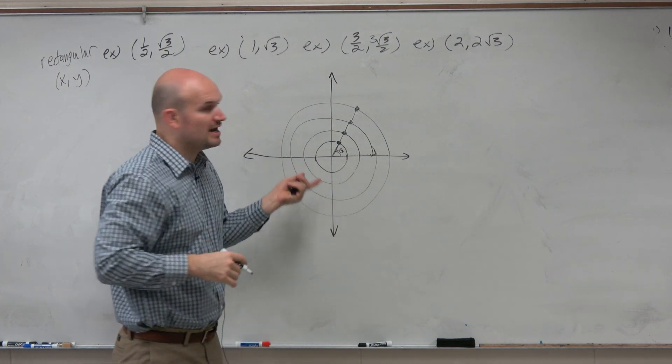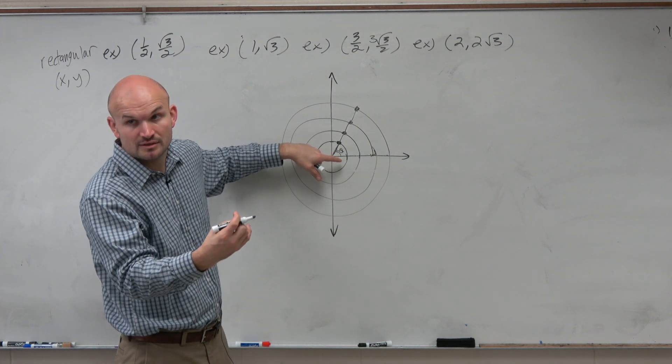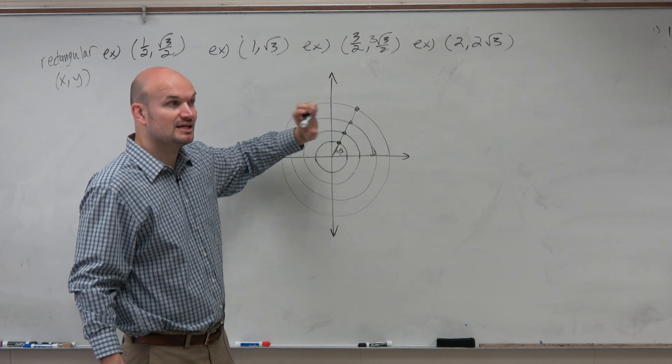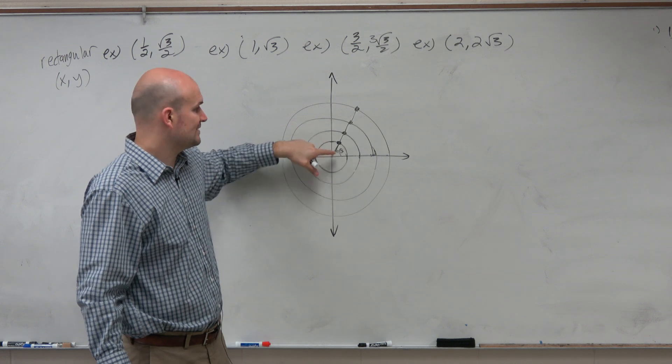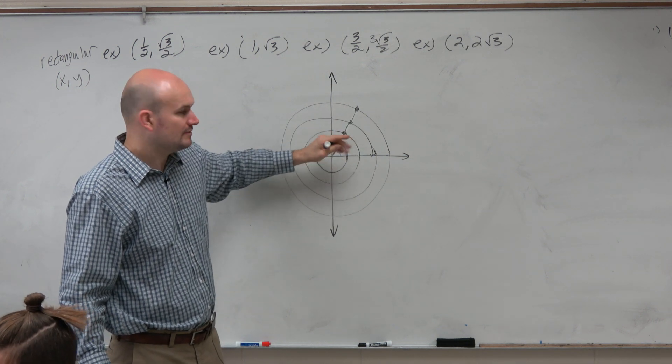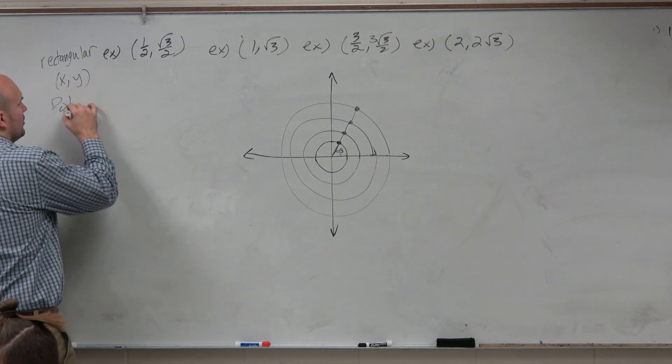Pi over 3, in radian form. And then also, the other thing that makes these unique from one another is their distance away from the origin. So we can classify these points by their distance away from the origin, which is another way of saying their radius of their circle, and then the angle in standard form. So that is what we call polar points.